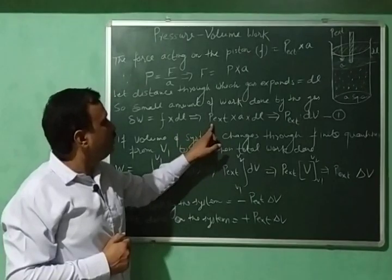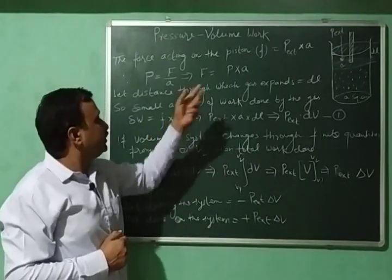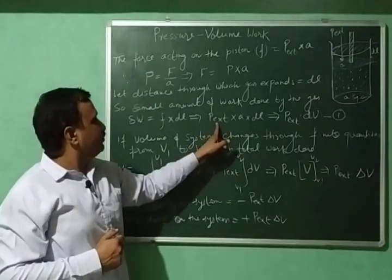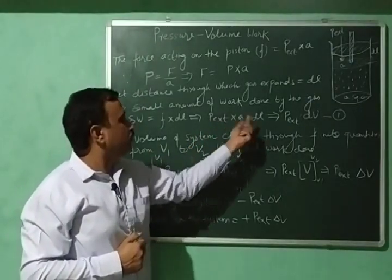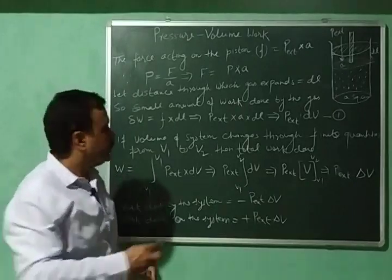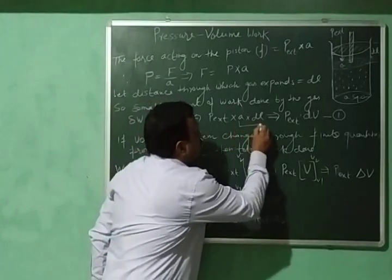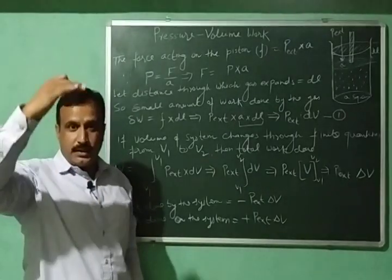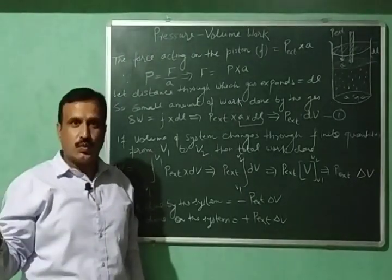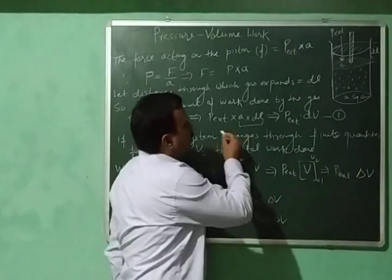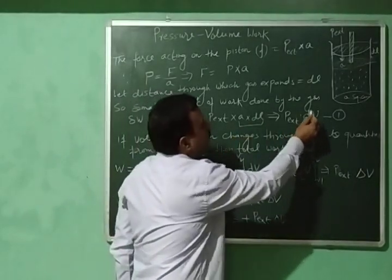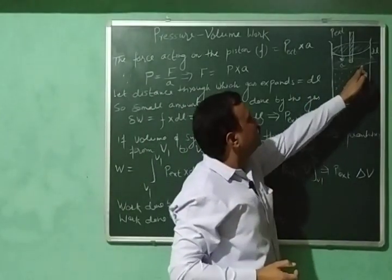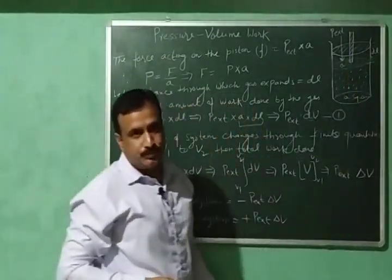Substituting the value of force — force equals P external into A — we have the small work done equal to P external into A into dL. Now, A into dL, that is area into distance (height), equals volume. So A into dL equals dV, the small change in volume that took place when the gas expanded through the length dL.